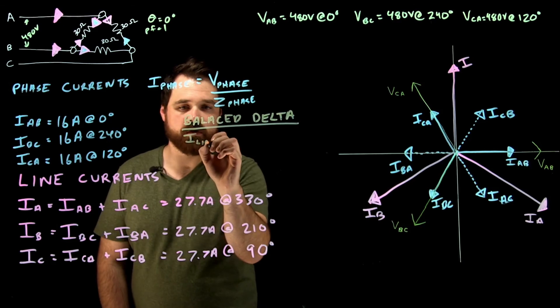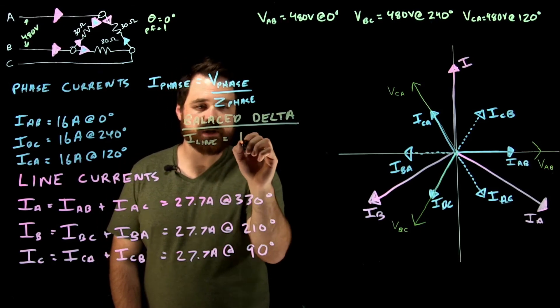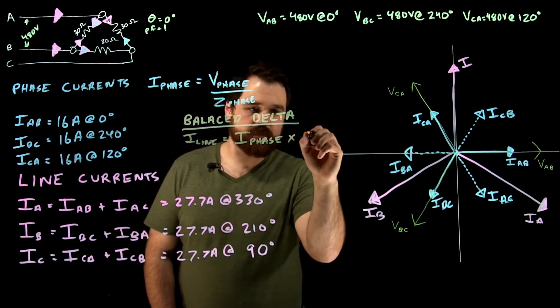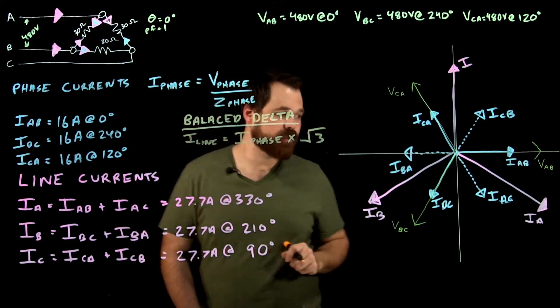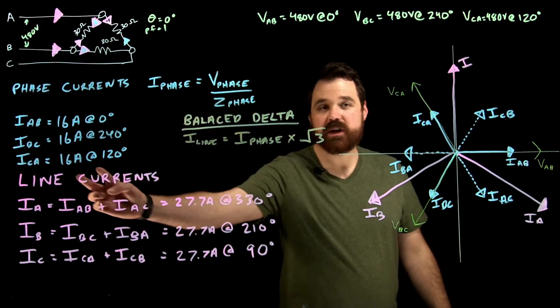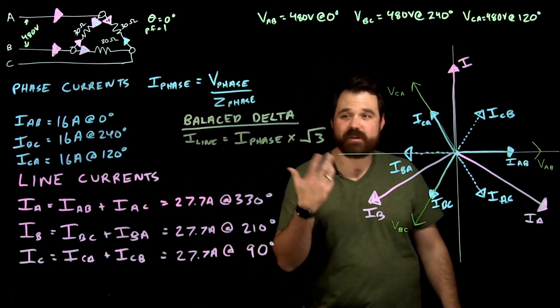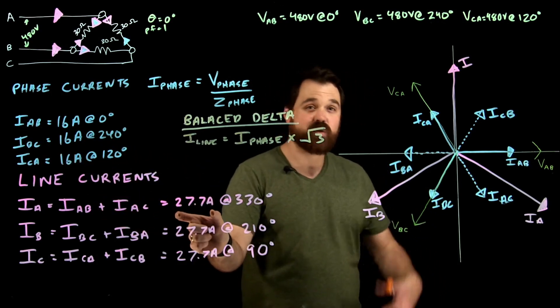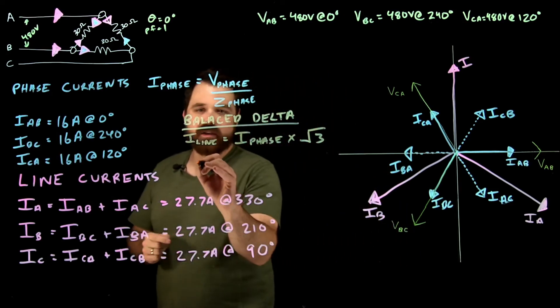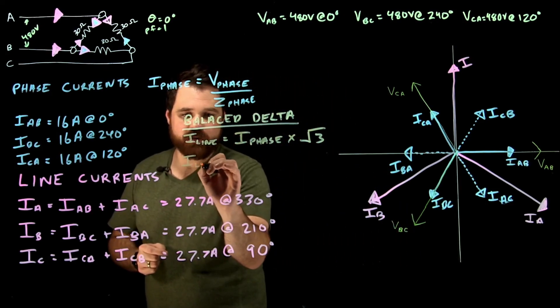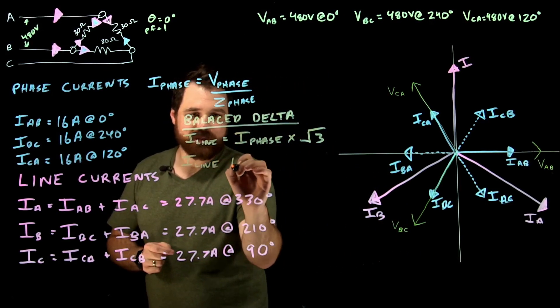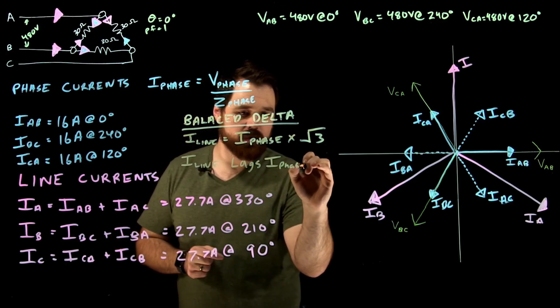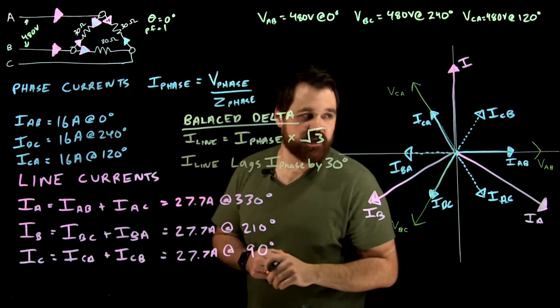In a balanced delta circuit, there's two current rules that are going to be very important. I line equals I phase times the square root of three. So 16 times root three gives us that 27.7. So the A phase was 16 amps times root three gives us 27.7 amps.